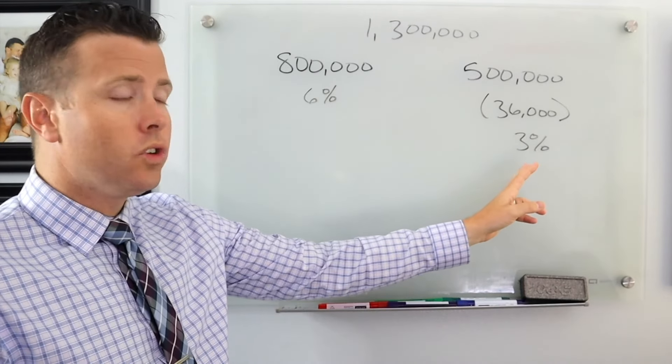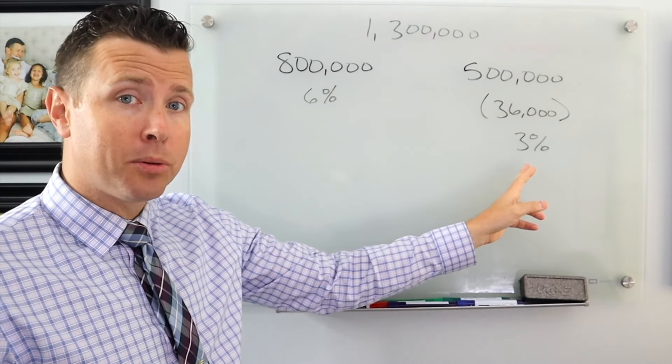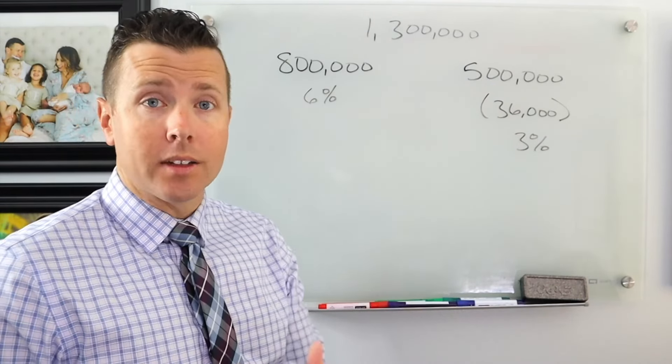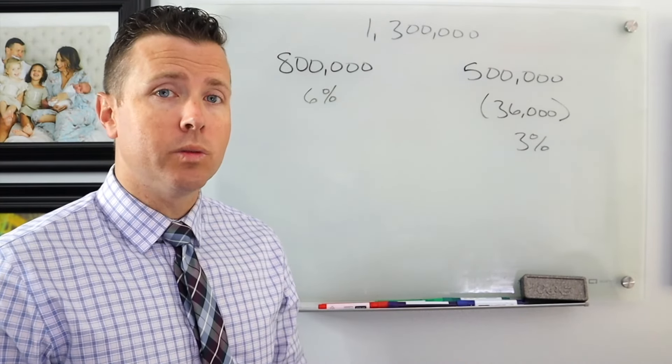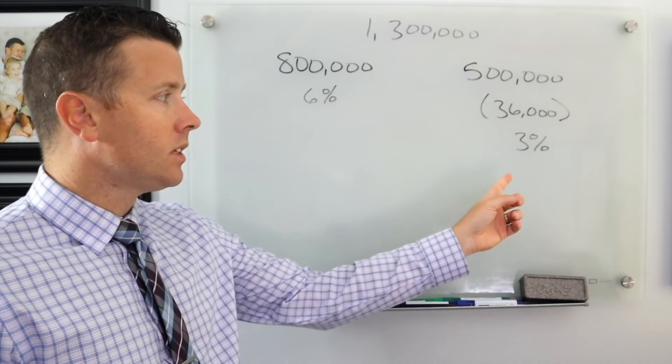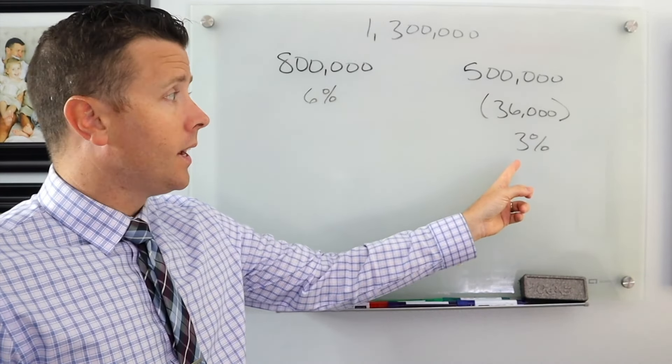So we're going to assume we're only going to average 3% a year on this $500,000. I think that's a pretty reasonable assumption. Obviously the market's going to go up and down. There is sequence of return risk, but let's just say it's going to average 3% for the rest of your life.